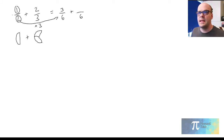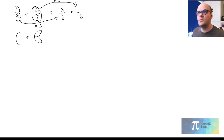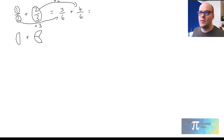Now I'll do the same with the second fraction. Looking at a third converted to a sixth — to get from three to six I've multiplied by two — so I need to do the same on top. I've got two on top, so it's two times two which is four. So I've got three sixths and four sixths.